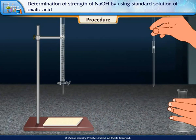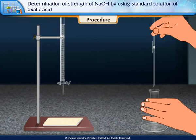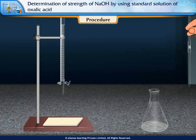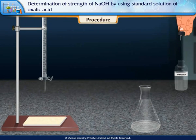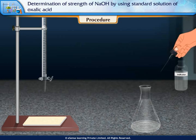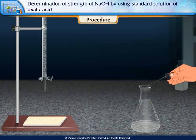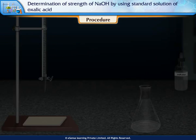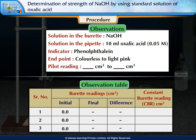Rinse the pipette with the given standard oxalic acid solution. Pipette out 10 ml of oxalic acid into a clean conical flask. Add 1 to 2 drops of phenolphthalein indicator to it. Prepare the observation table as shown.